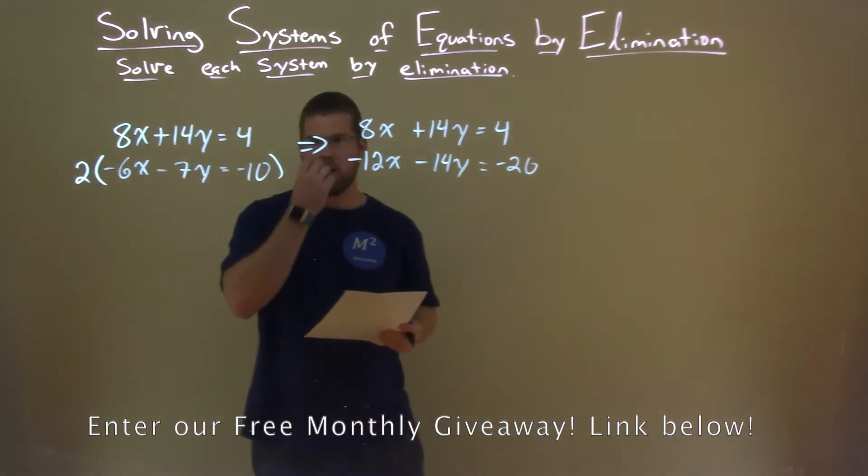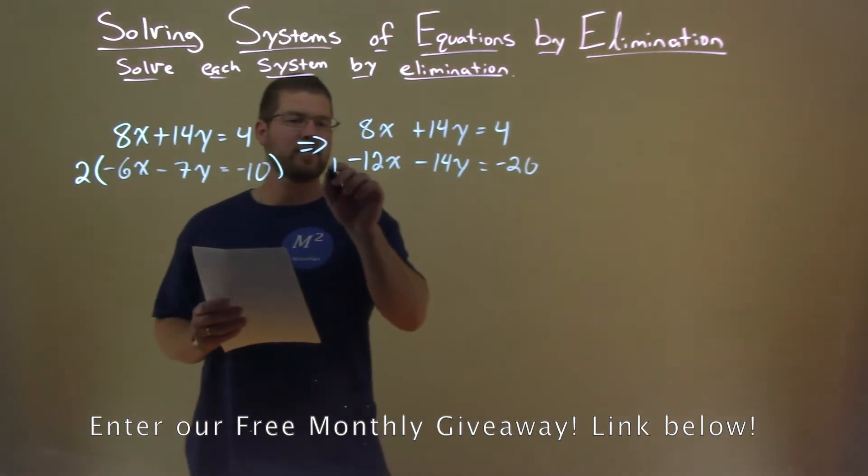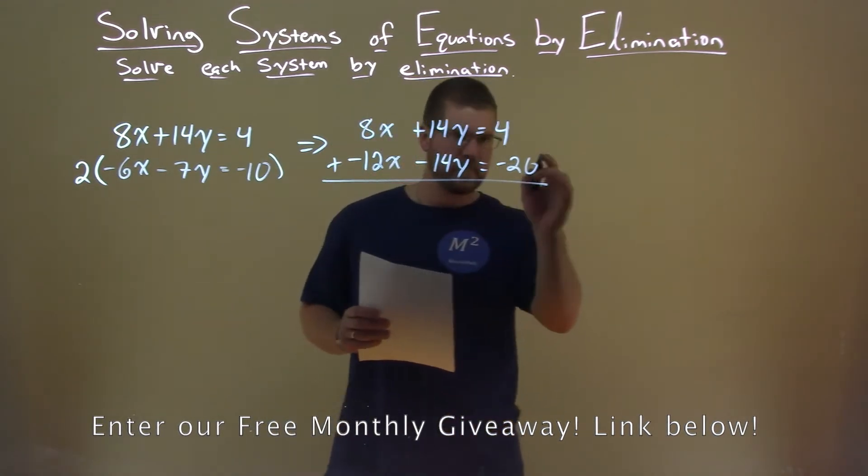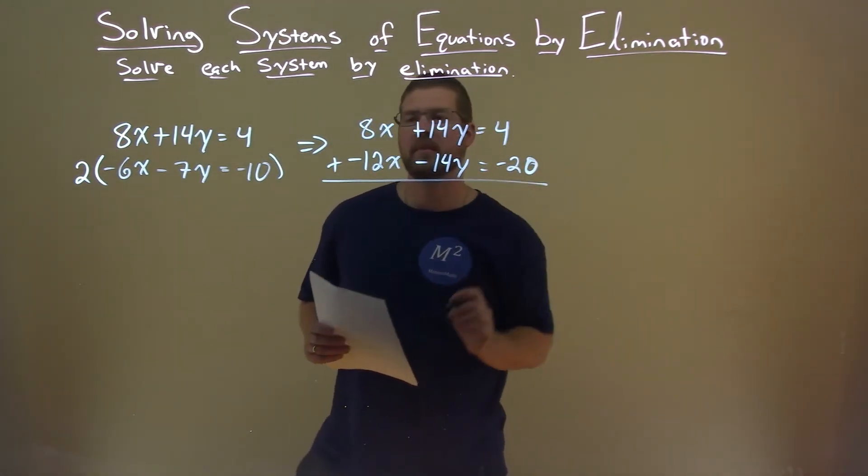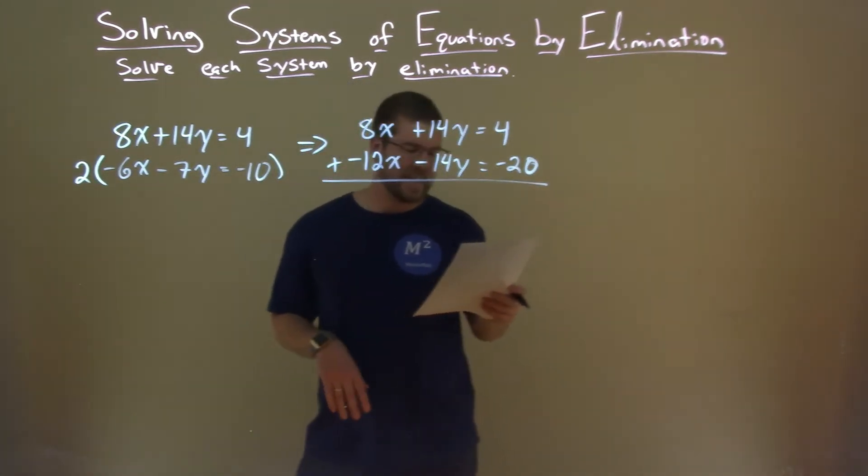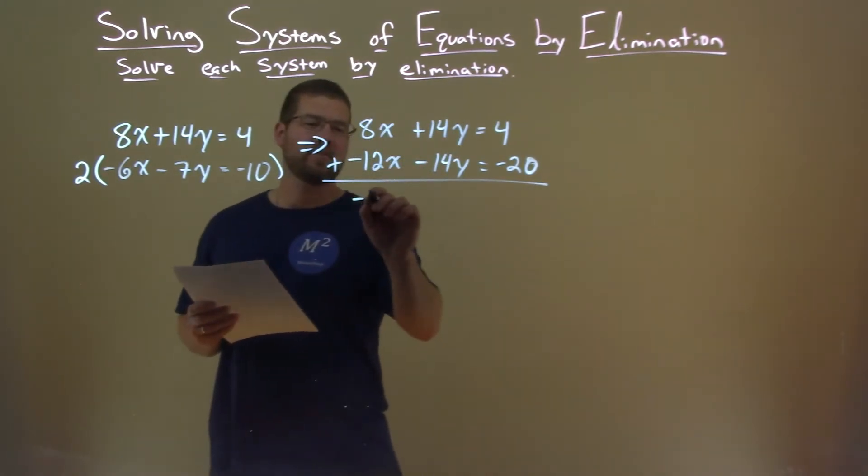Alright, so now we're going to add these two equations together. That's a 20. 8x plus negative 12x is negative 4x.